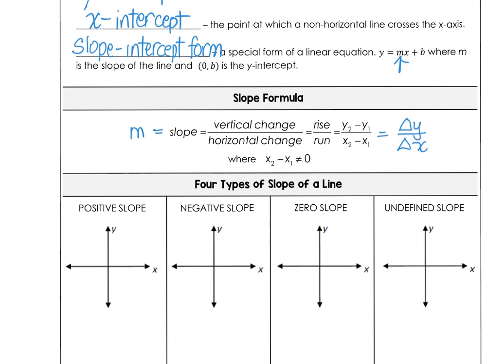Now there are four types of slope. There is a positive slope, a negative slope, a zero slope, and an undefined slope.